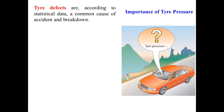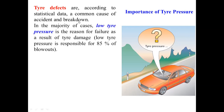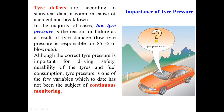Tire defects, according to statistical data, are a common cause of accidents and breakdowns. In the majority of cases, low tire pressure is the reason for failure and tire damage. Specifically, low tire pressure is responsible for nearly 85% of blowouts. This is a very large number, making it very important to know the condition of the air pressure inside the tire.